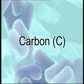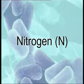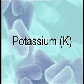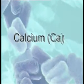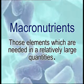Analysis of microbial cell composition shows that over 95% of cell dry weight is made up of a few major elements such as carbon, oxygen, hydrogen, nitrogen, sulfur, phosphorus, potassium, calcium, magnesium, and iron. These are called macro elements or macronutrients because they are required by microorganisms in relatively large amounts.